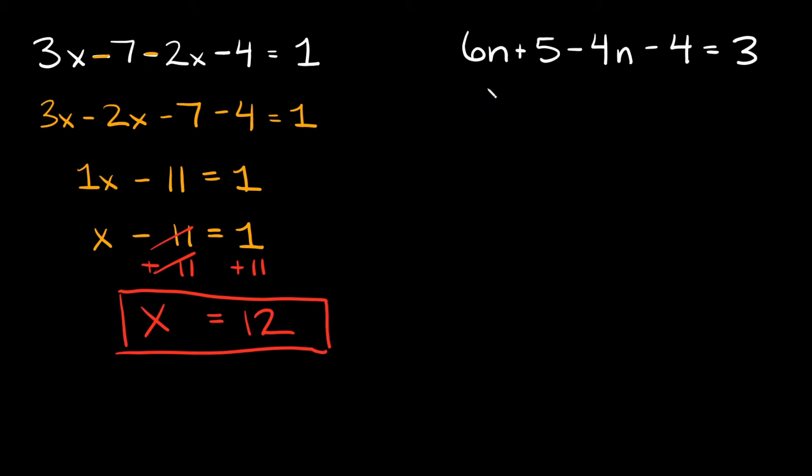First I'm going to write my n terms so we have 6n and then here we have minus 4n minus 4n and then here we have plus 5 so plus 5 goes there and then minus 4. Again I kept all the signs with the terms so make sure you move those to keep it consistent and then this is equal to 3.